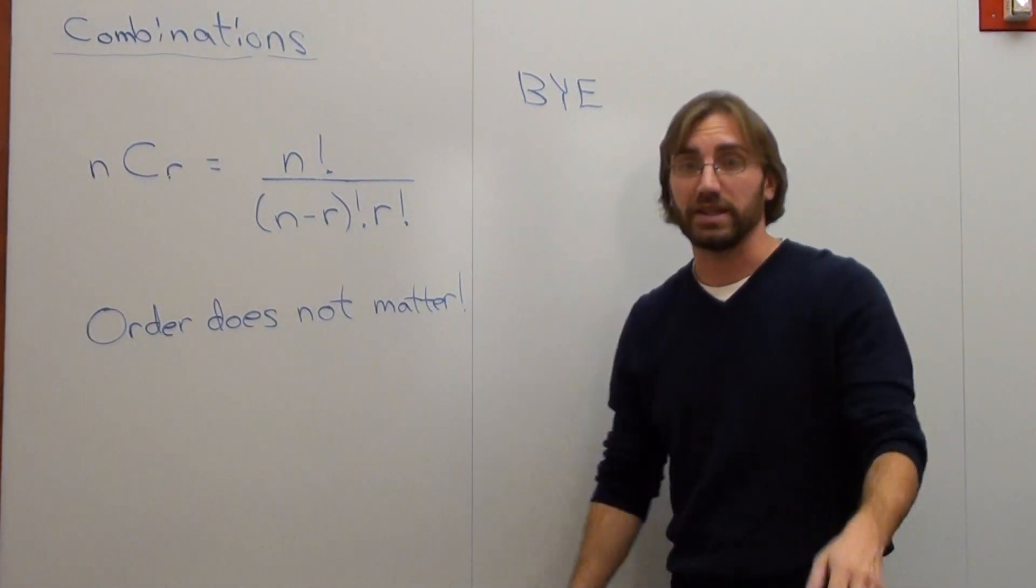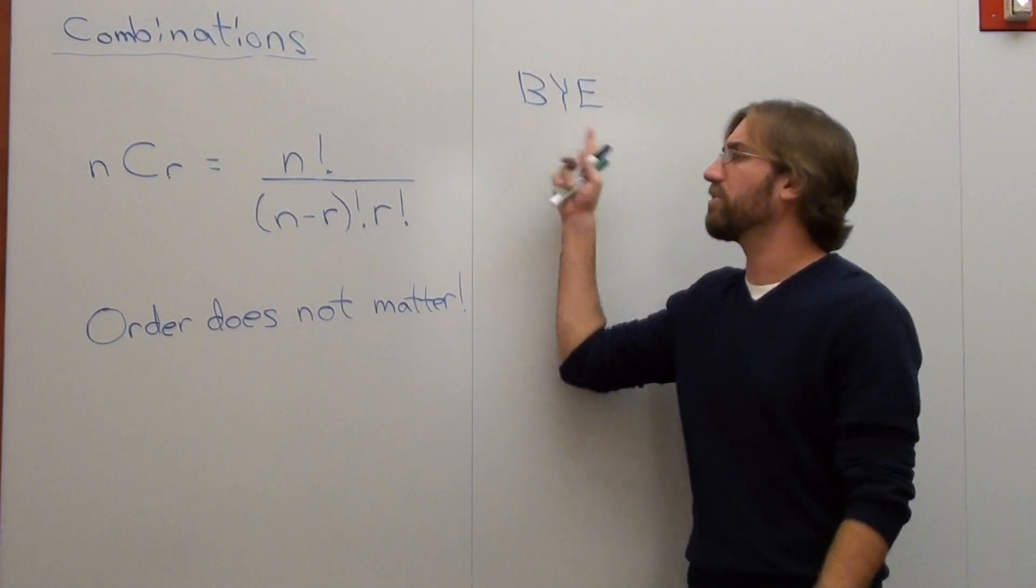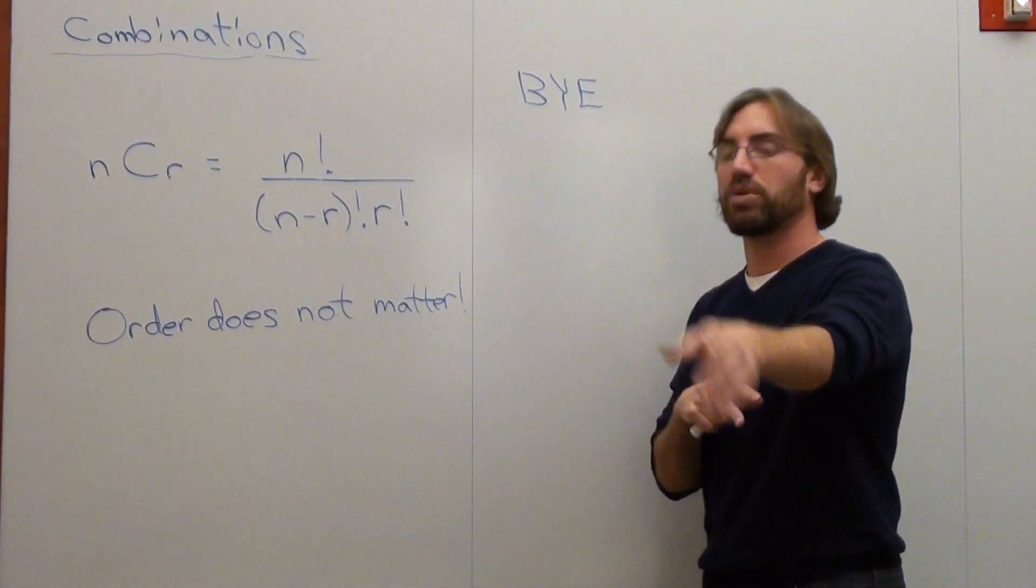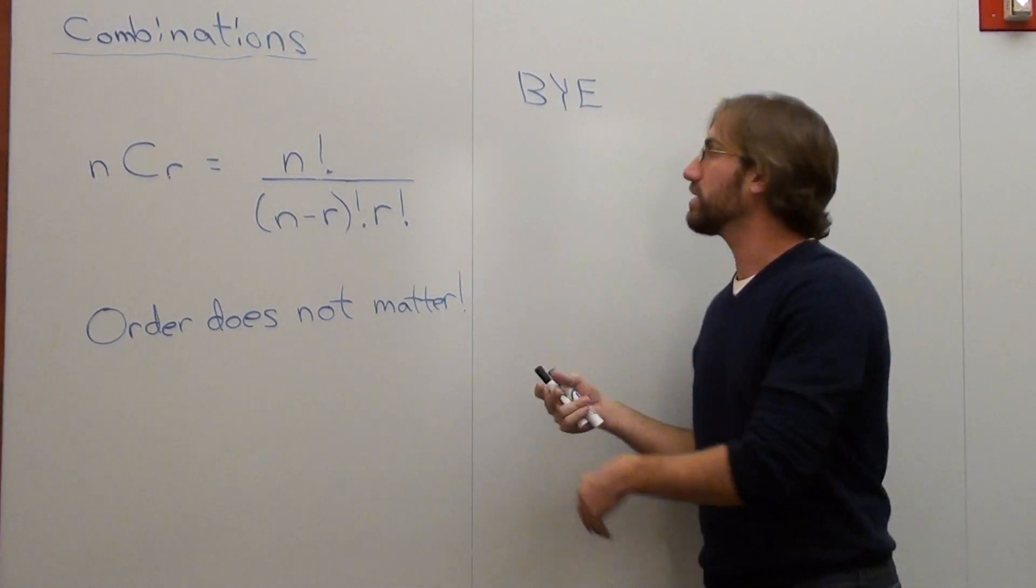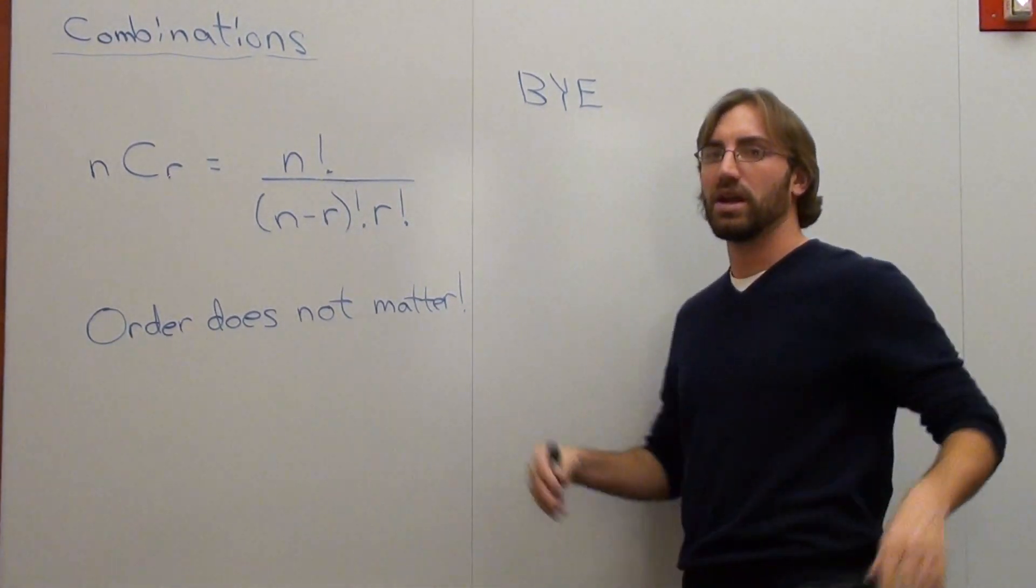But that's it. Just one. That's it. Some of you say no, you can put the Y first or you can put the E first. Yeah, if it's a permutation, because the order is going to matter. But on a combination, order doesn't matter. So as long as you've got the B, the Y, and the E, you're fine.